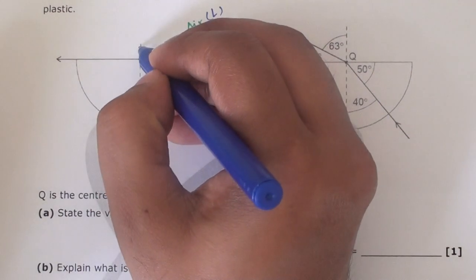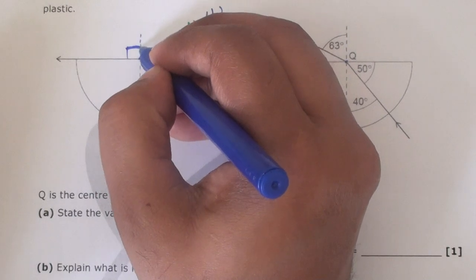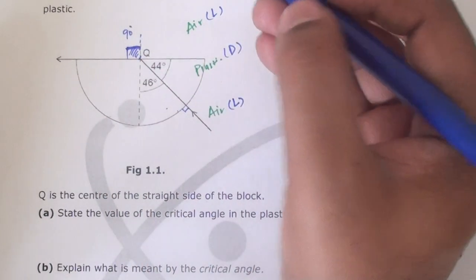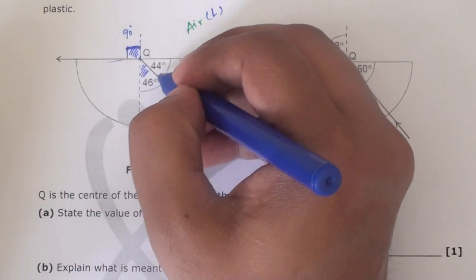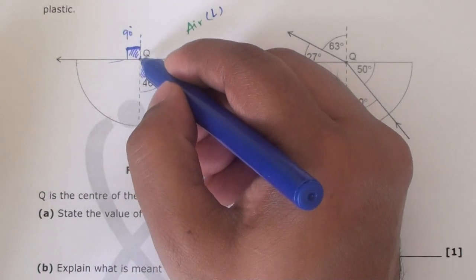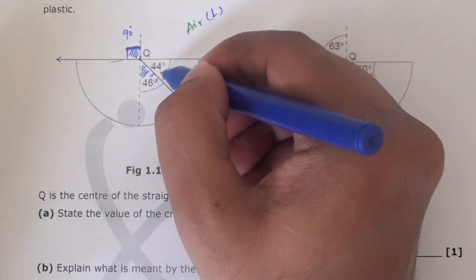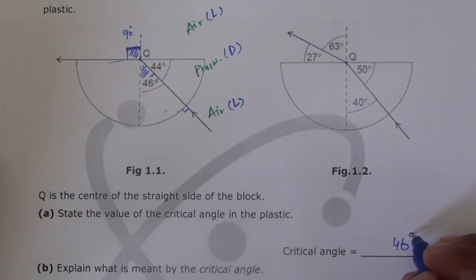This angle of refraction, if we take it from normal - if this is normal - this angle of refraction is 90 degrees and it's bending along the surface as well. So whatever this angle is, this is our angle. A lot of students will get confused and take 44, but no, it's always measured with respect to normal. So 46 degrees is our critical angle.